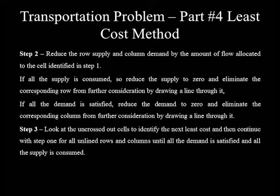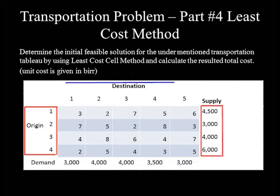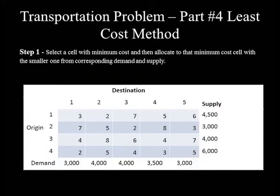Let's set the initial feasible solution for this transportation problem. We need to determine the initial feasible solution using the Least Cost Cell method and calculate the total cost. Unit cost is given per unit. The table contains sources at the left-hand margin with their supply at the right, destinations at the top with their corresponding demand at the bottom, and numbers in the table are unit transportation costs.